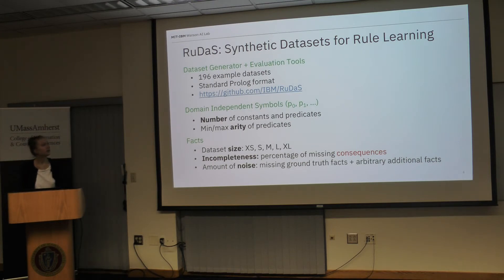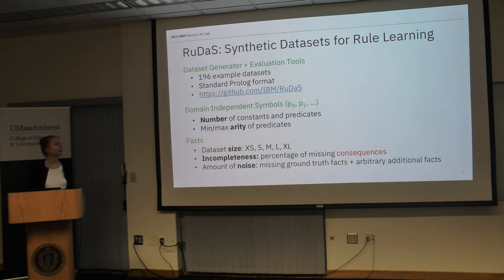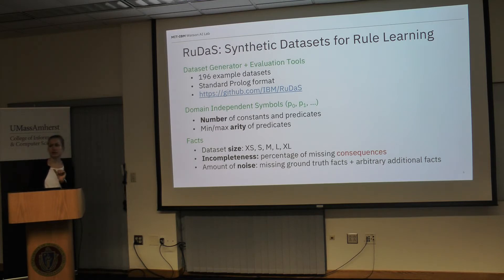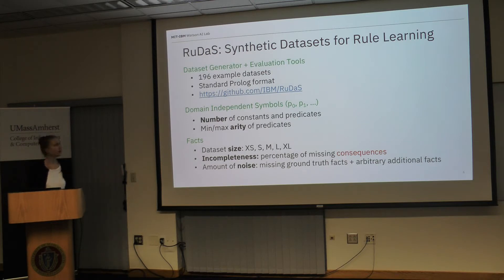Our datasets contain abstract predicate symbols like P1 and P0, but no domain names like 'child' or 'mother'. You can vary the number of constants and predicates during generation. You can also vary the arity of the predicates, so we aren't restricted to binary relations, although that is the standard in knowledge graphs. Regarding fact sets, you can vary the dataset size: XS means fewer than 100 facts, S means fewer than 1,000, and so on.